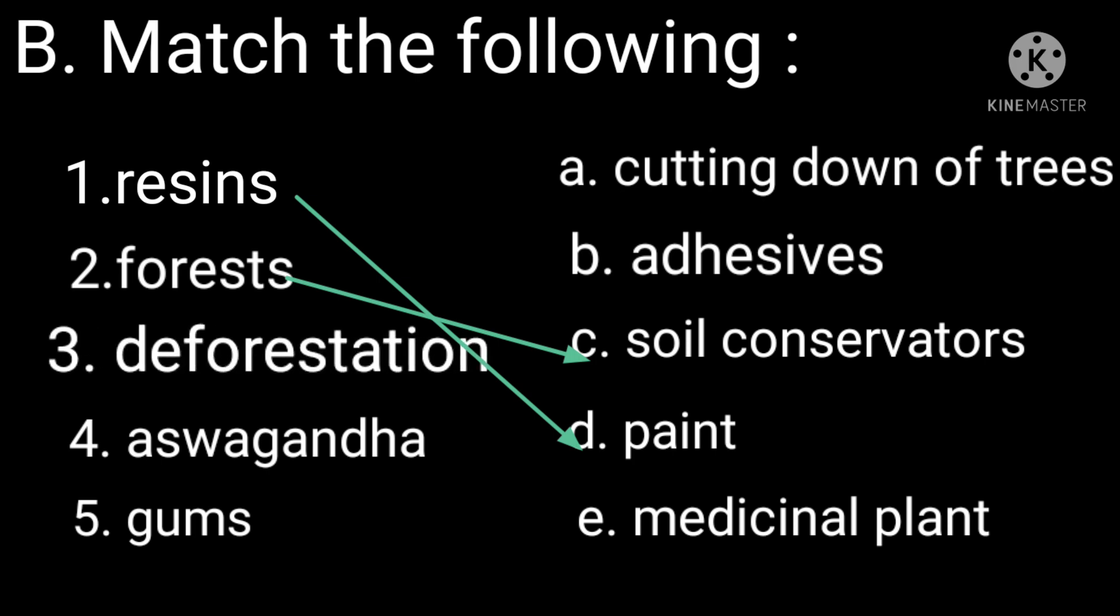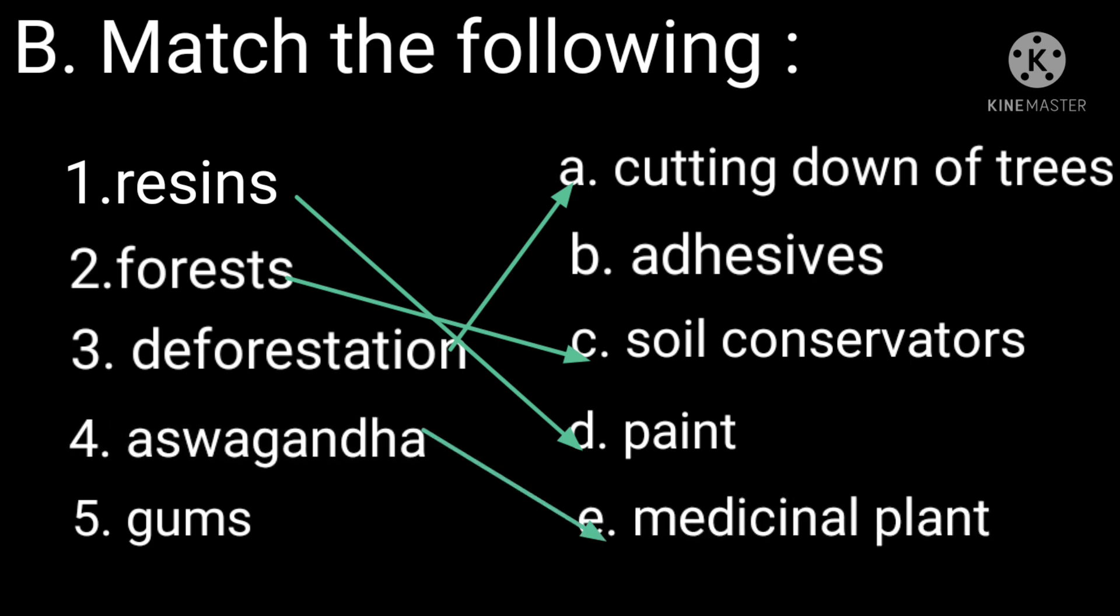Third is deforestation and it will be matched with option A, cutting down of trees. Next is ashwagandha and it will be matched with part E, medicinal plant. Last is gums, which will be matched with option B, adhesives.